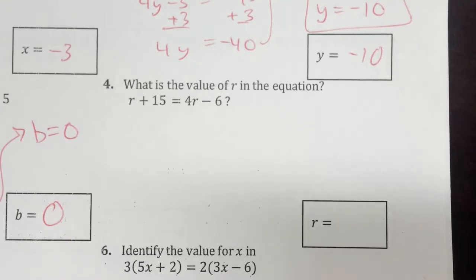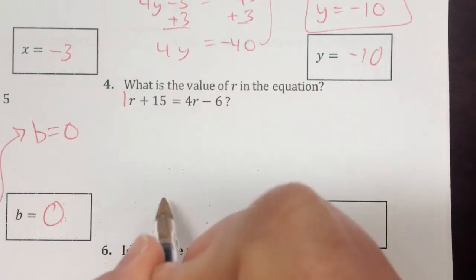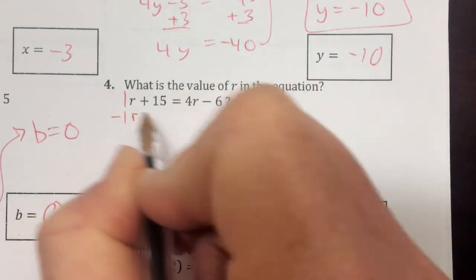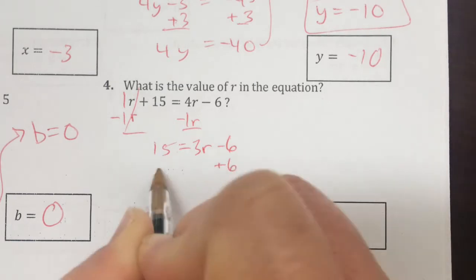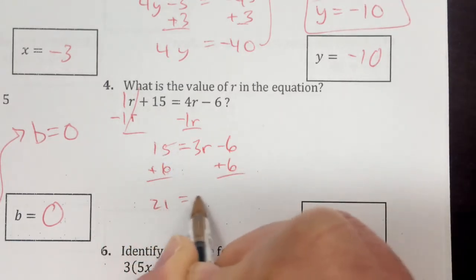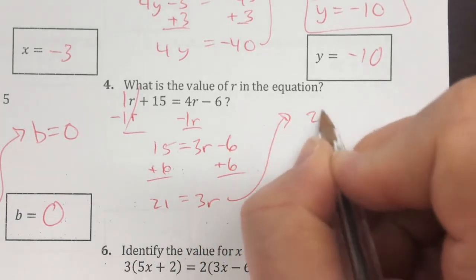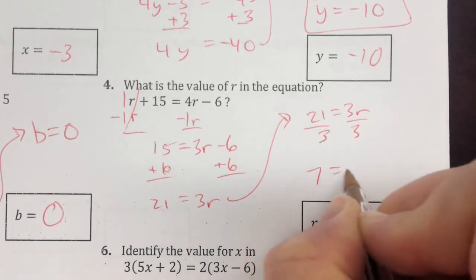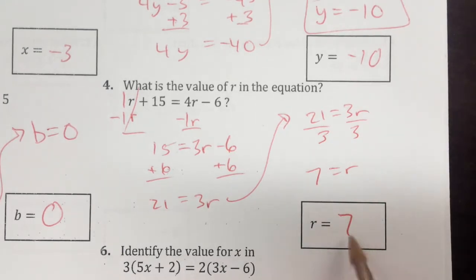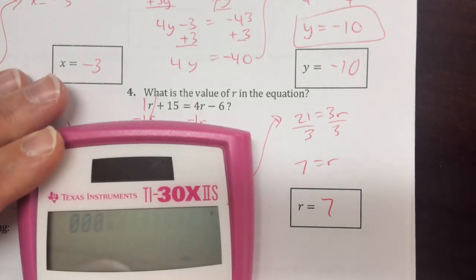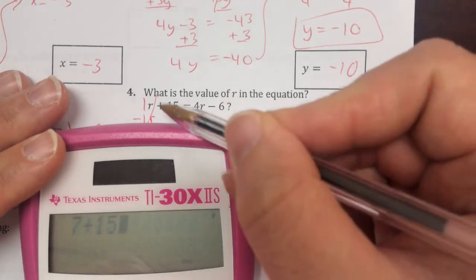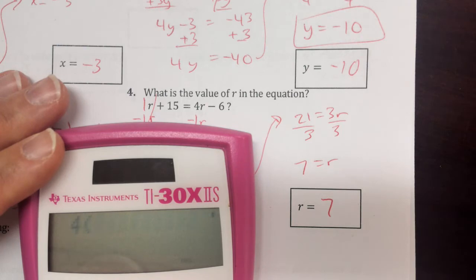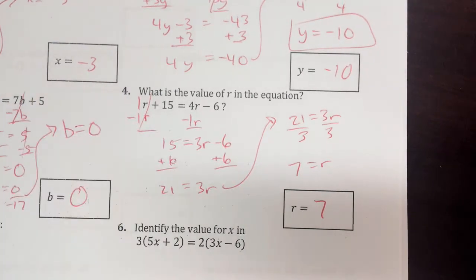Number 4 — we want all the r's on one side. I put a 1 in the front. Subtract 1r from both sides, and I get 15 is equal to 3r minus 6. Add 6 to both sides, and I get 21 is equal to 3r. Divide both sides by 3, and r equals 7. Remember, when entering into the computer, only put the number 7, not 'r equals 7.' Double-checking: 7 plus 15 gives 22, and the right side also equals 22. The answer is 7.